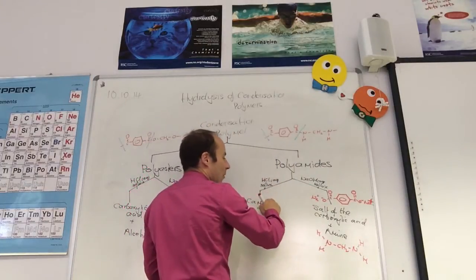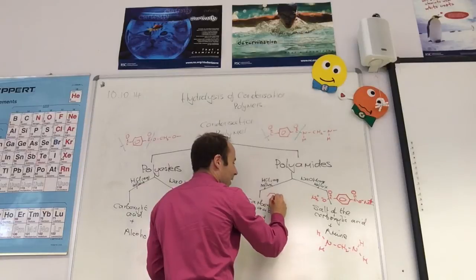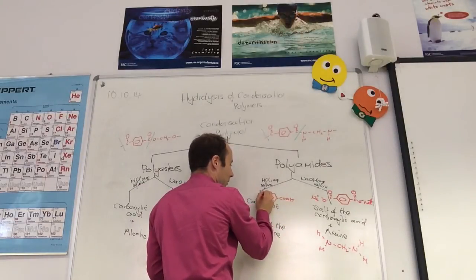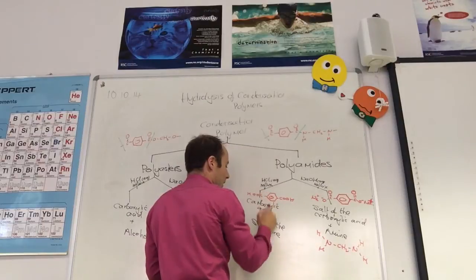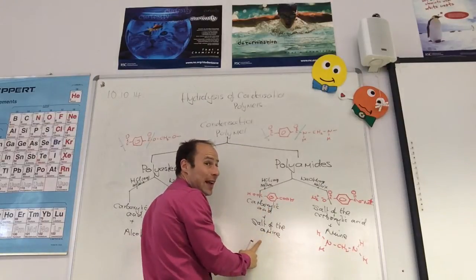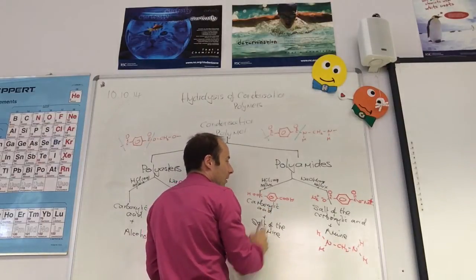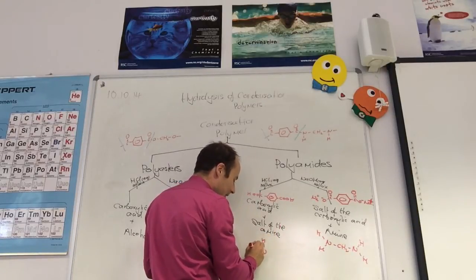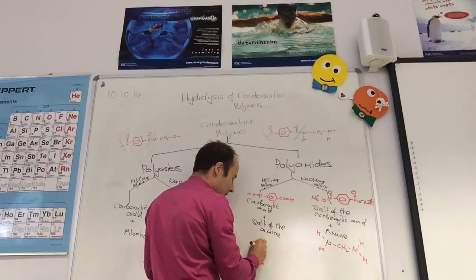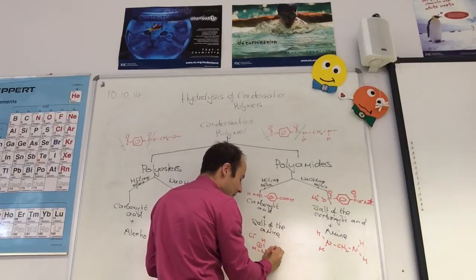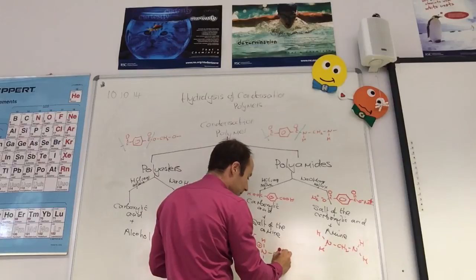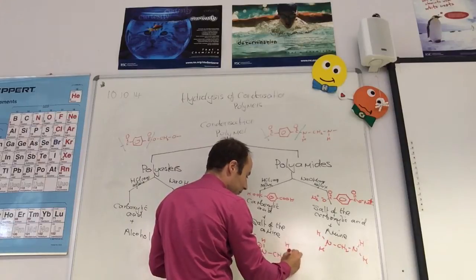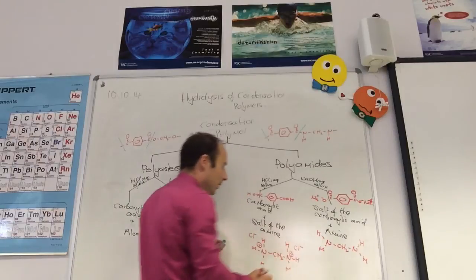If I use HCl, it will give me the carboxylic acid. And now it's going to give me the salt of the amine. Because I've used HCl, it will be NH3 plus Cl minus. But it's going to be on both sides. Like so. Cl minus.